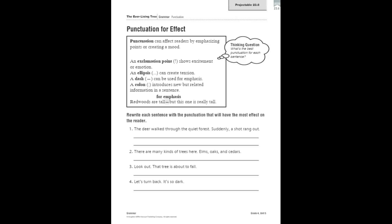Let's look at the sample sentence here. Redwoods are tall, but this one is really tall. What's the best punctuation for each sentence? The dash emphasizes that the second part of the sentence is important. It shows the speaker knows that redwoods are tall, but that this one is taller than most. He wants to emphasize that point to the readers.